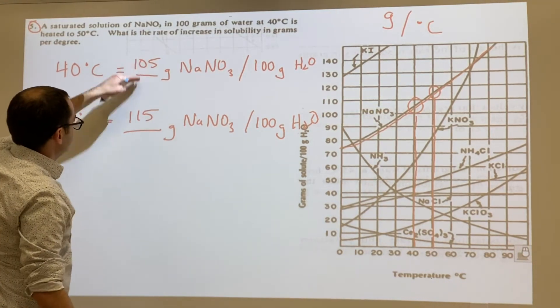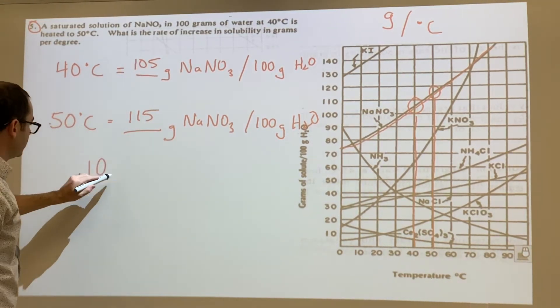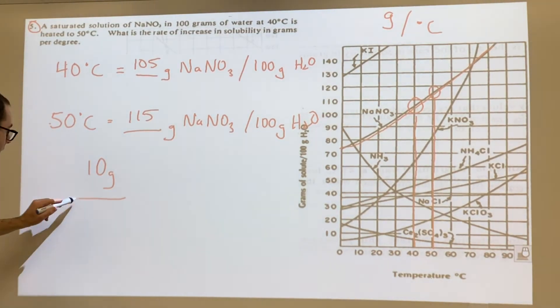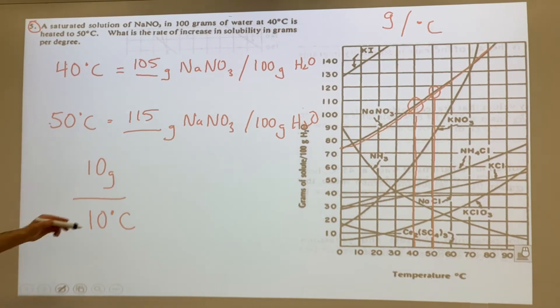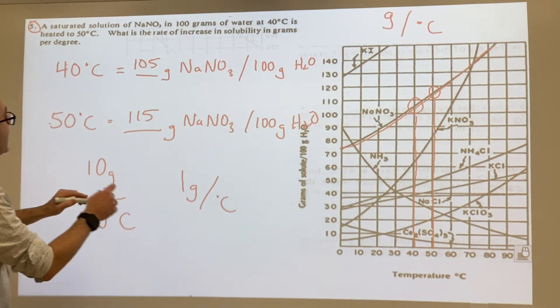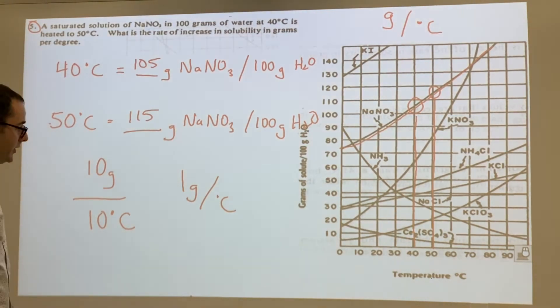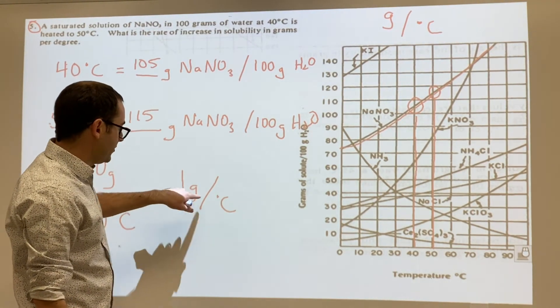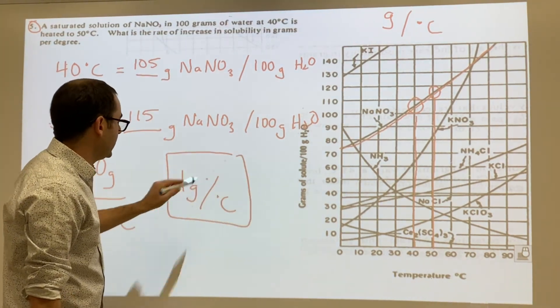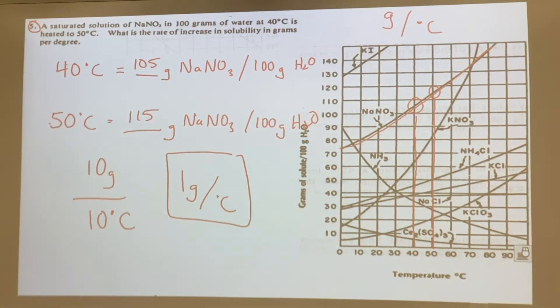We have to figure out the difference. So we have 10 grams - it changed by 10 grams per how many degrees Celsius? 10 degrees Celsius. And then we need to simplify this, so it would just be one gram per degree Celsius. That's the rate of increase in solubility, so it goes up one gram for every degree Celsius. That would be your answer for that one.